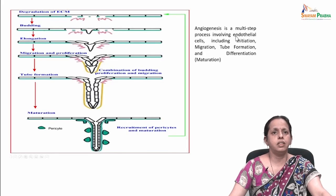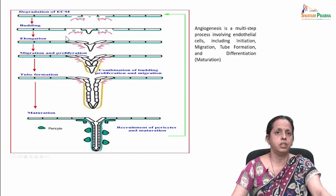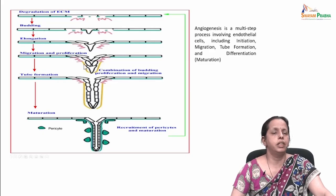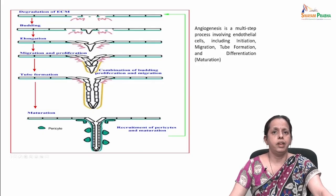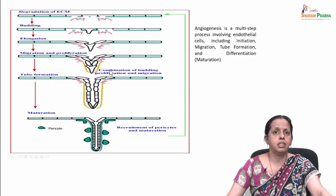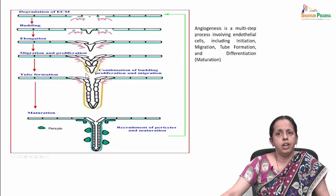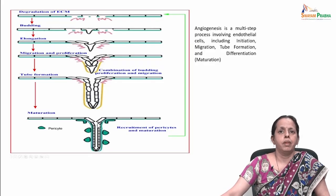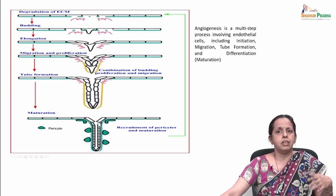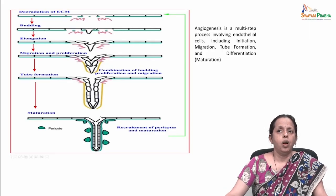Angiogenesis is a multi-step process which involves endothelial cells and includes initiation, migration, tube formation, and differentiation. The oxygen and nutrients supplied by the vasculature are crucial for cell function and survival. During organogenesis, closeness is ensured by coordinating growth of vessels and parenchyma. Once a tissue is formed, the process of angiogenesis is transitory — it is not needed every time.